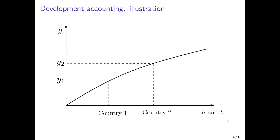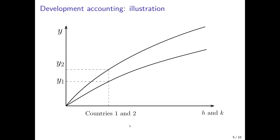Now we have a second country that faces the same production function but different levels of human capital and physical capital. Country two would then have a higher per capita GDP, and the two countries would lie on the same production function because the technology they face is the same and their productivity levels are the same. However, we could also have a situation where countries one and two have the same levels of accumulable production factors H and K, but different productivity levels. Then the two countries would not be on the same production function — the higher productivity level of country two would shift its production function counterclockwise, giving it a higher output per capita of Y2.